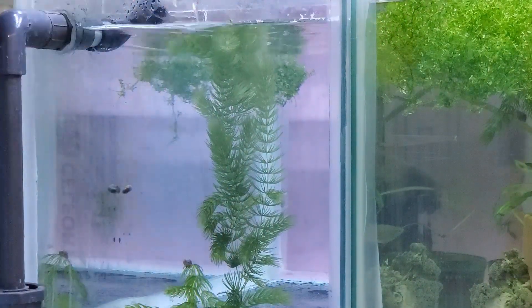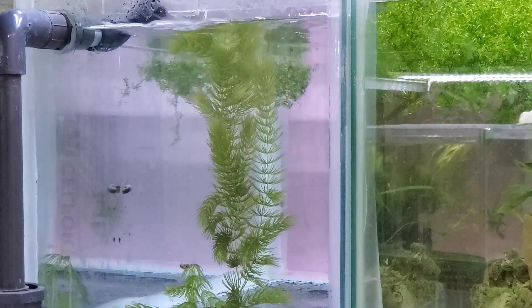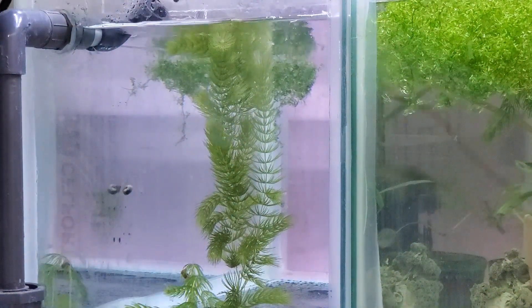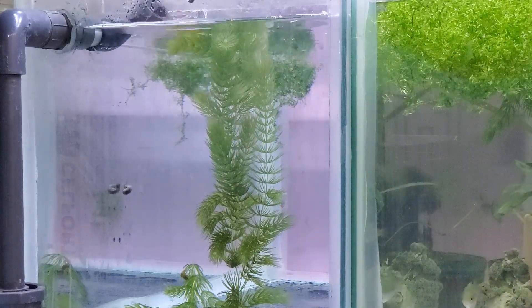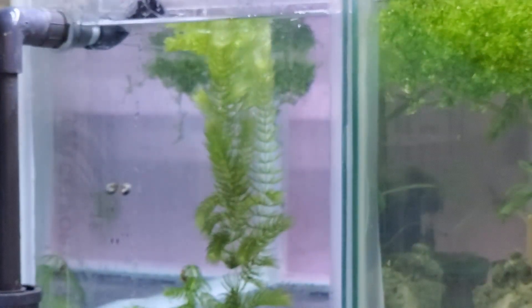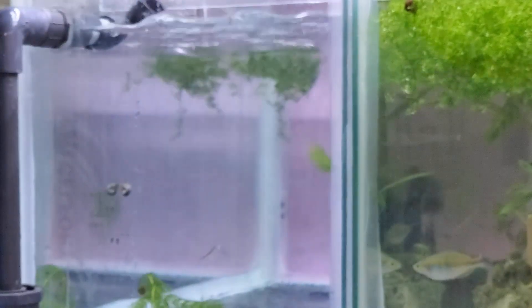To start, I'm going to take all the plants out, remove the carbon filter, and once all the life is out, I'm going to scrub it down and drain it. Then I'm going to hit it with concentrated vinegar.